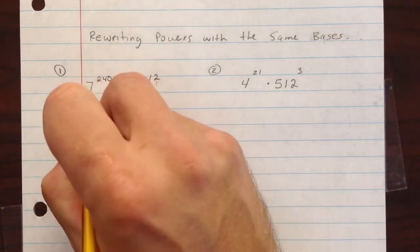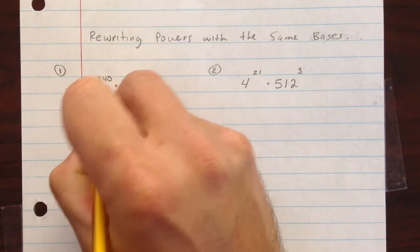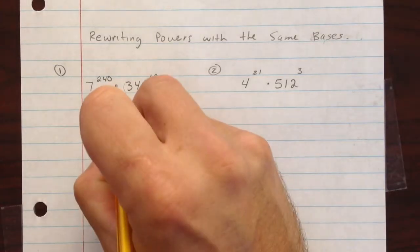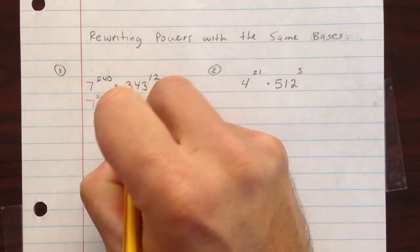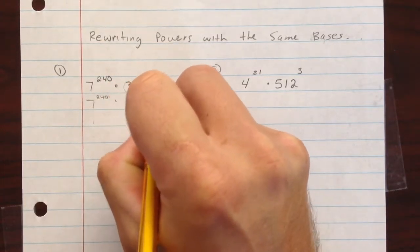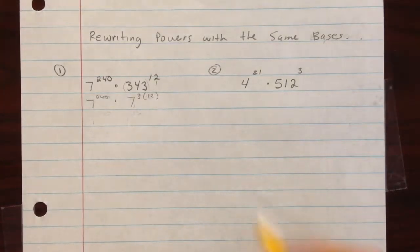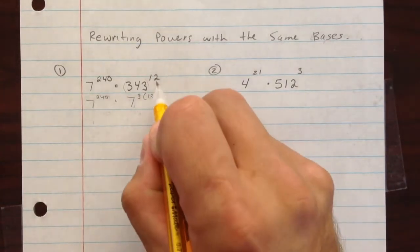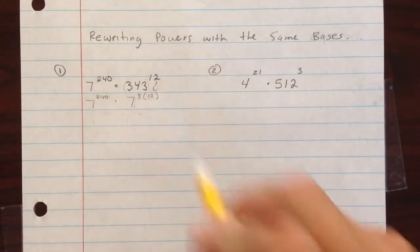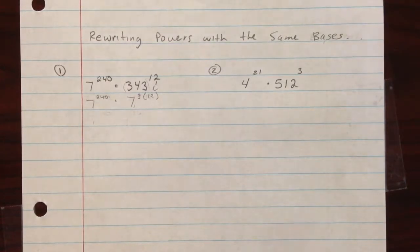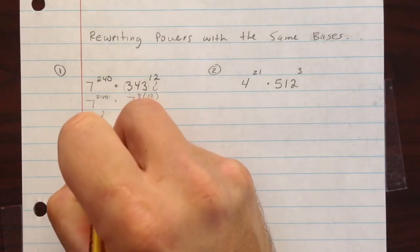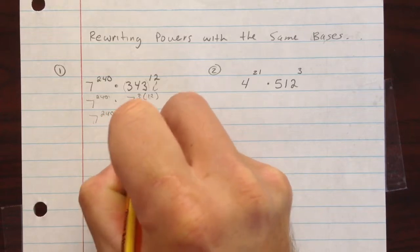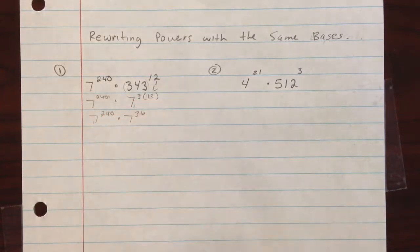You could use a calculator to figure that out. So we take 7 to the 240th power and then multiply that by 7 to the 3rd times 12, because this part right here — this 343 — is 7 to the 3rd. We just bring down the 12. After that, we can take 7 to the 240th times 7 to the 36th, because 3 times 12 is 36.